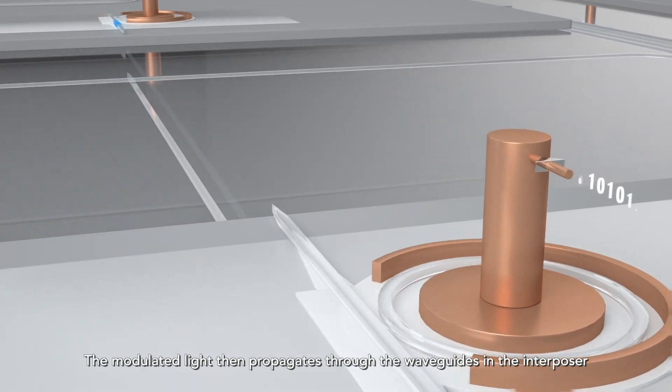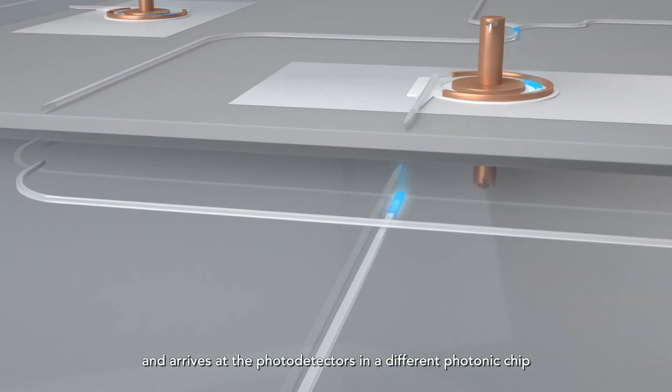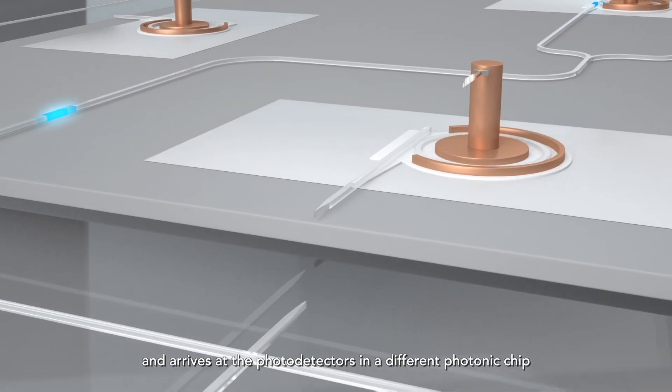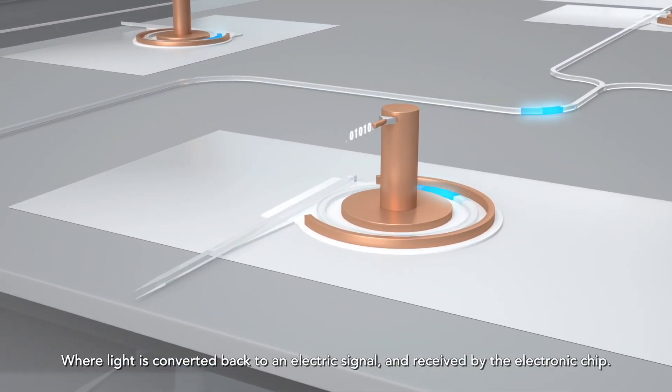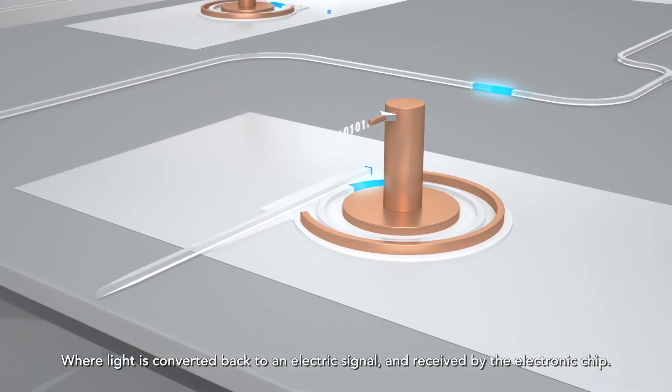The modulated light then propagates through the waveguides in the interposer and arrives at photodetectors in a different photonic chip, where light is converted back to an electric signal and received by the electronic chip.